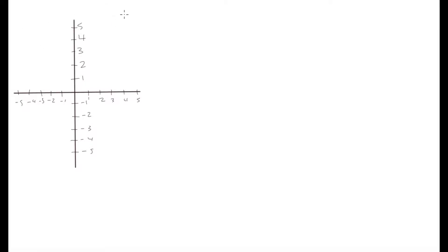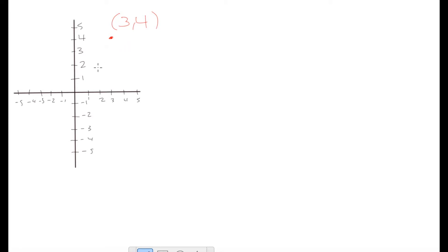Let's say we're given the coordinates (3, 4), where the x-axis coordinate is the first number and the y-axis coordinate is the second number. So we have a point where x equals 3 and y equals 4. X is equal to 3 and y is equal to 4, so the coordinate (3, 4) is right here. We can draw a point there — that is our coordinate.